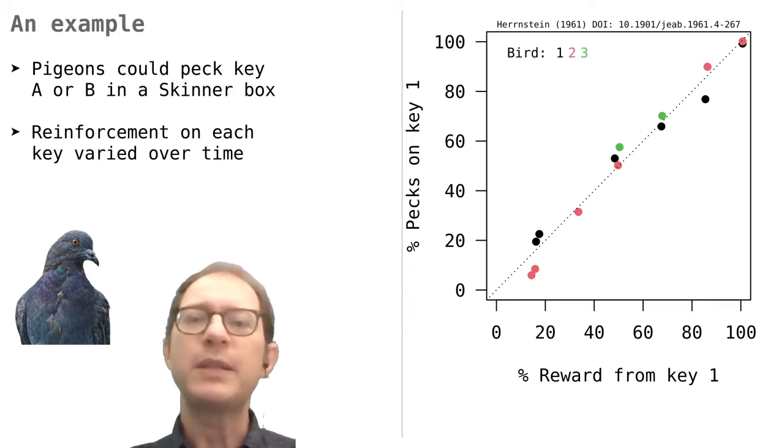When only 20% of the rewards were earned by pecking key 1, they pecked key 1 about 20% of the time. But when key 1 was much better than key 2, they preferred to peck that one. The dashed line represents the theoretical prediction of perfect matching, and we see that overall the birds are extremely close to it.